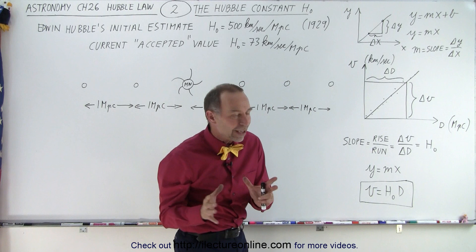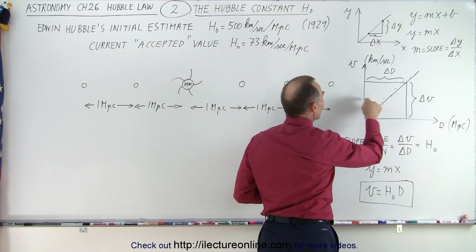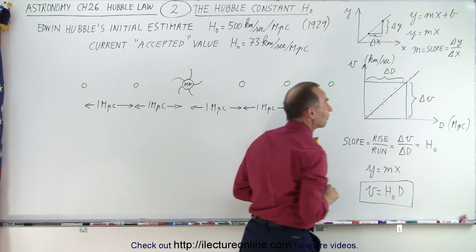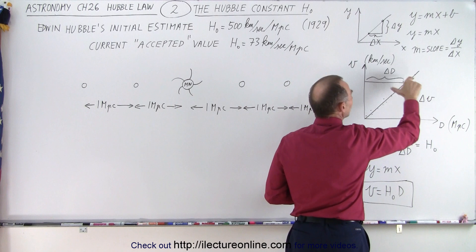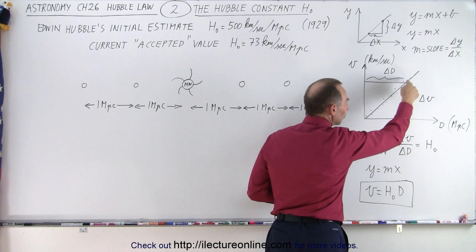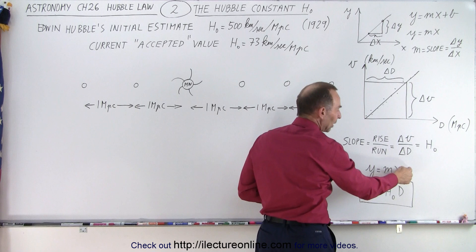In the very same way, Hubble set up a diagram where he plotted down the galaxies based upon the recessional velocities on the vertical axis and the estimated distance using the Cepheid variables. And he realized that there appeared to be a linear relationship between their velocities and their distances. So if he then took the ratio of the rise over the run, the change in the velocity over the change in the distance, that constant is equal to the slope of the line.